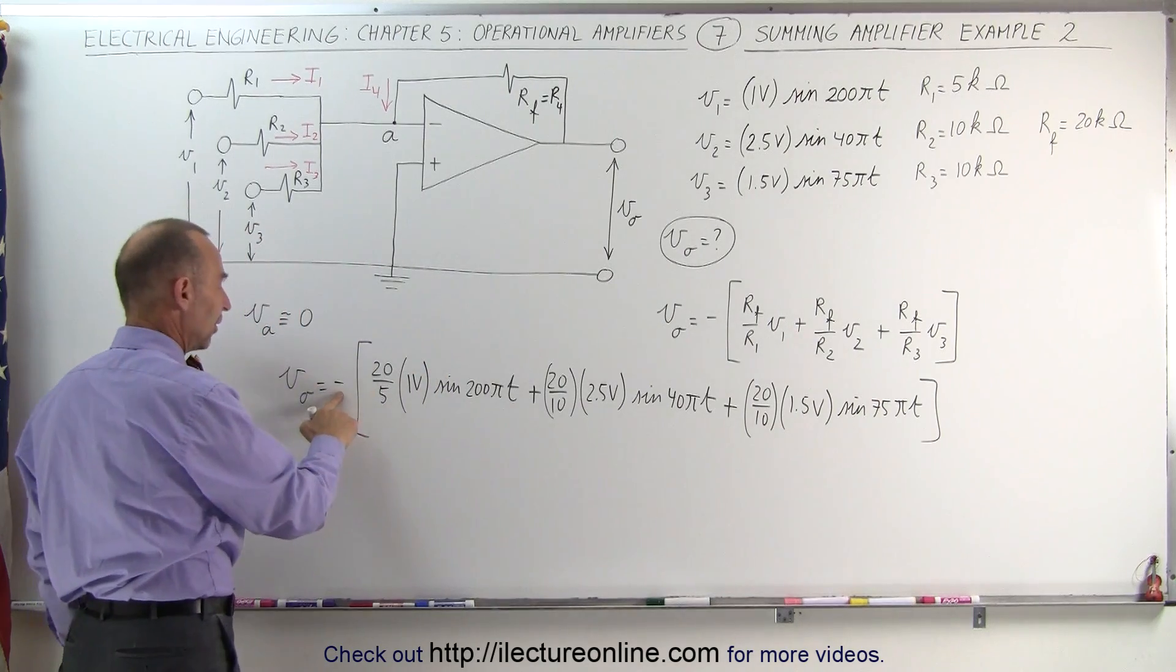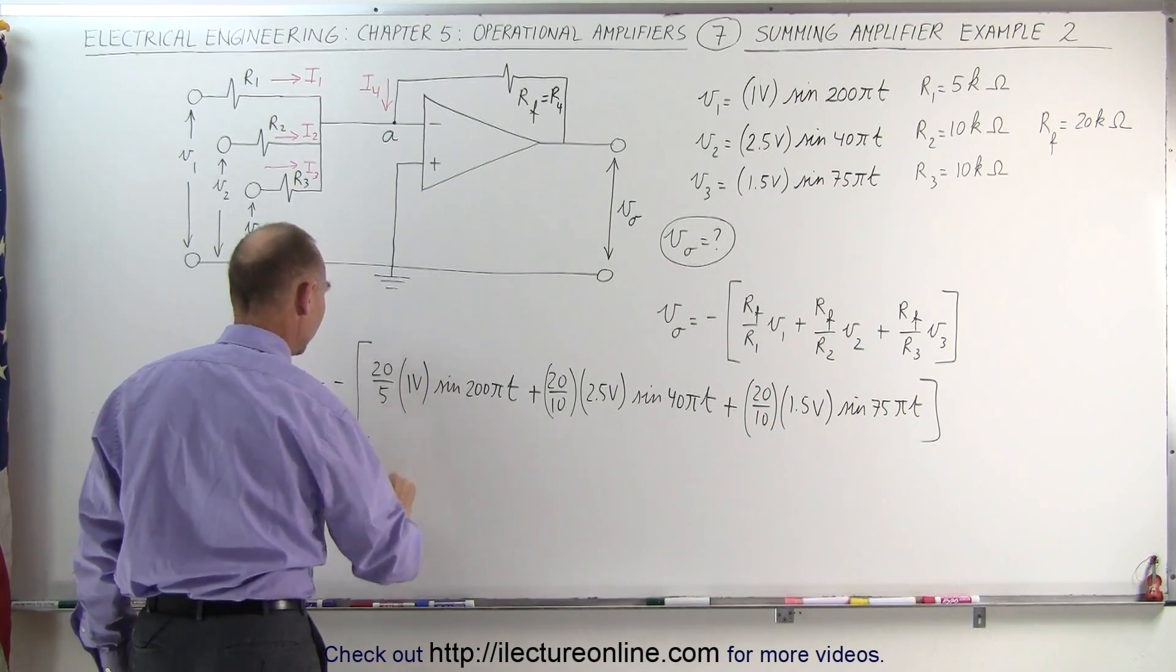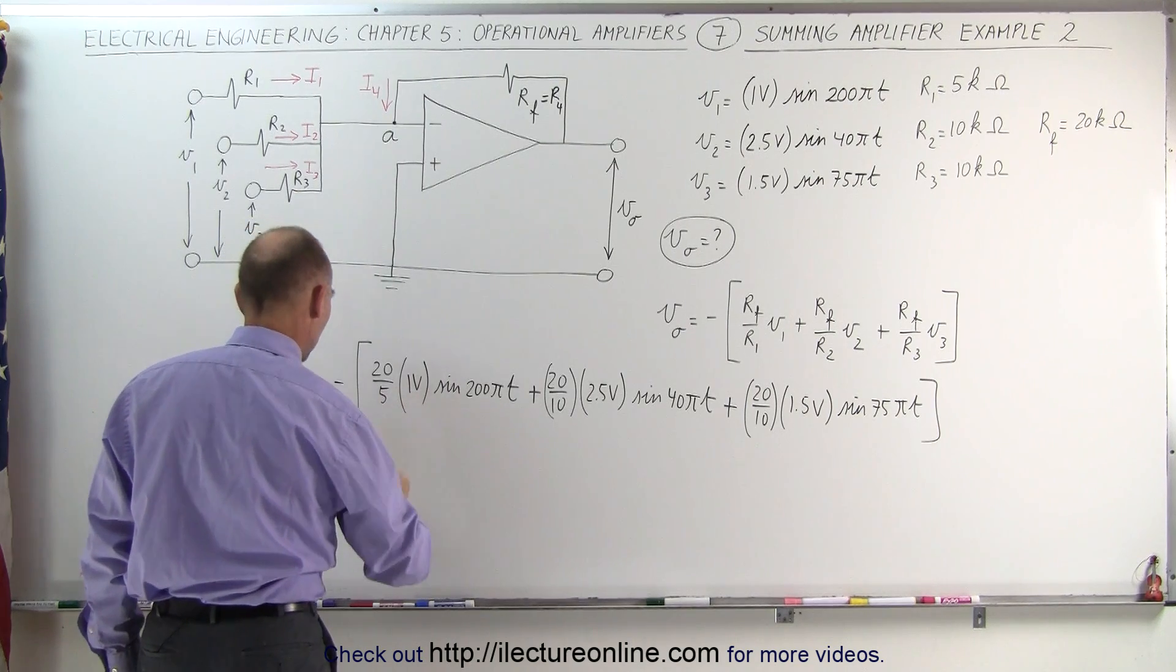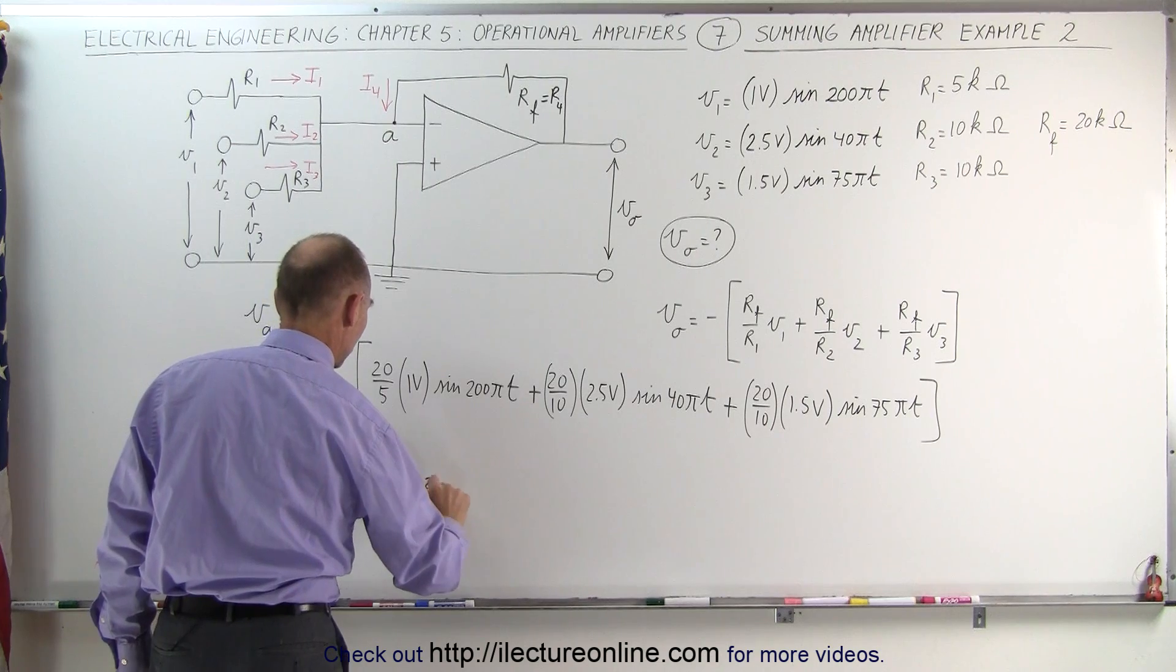Now we still have the negative in front because it's an inverting mode. This becomes equal to the negative of 20 divided by 5 is 4, that would be 4 volts times the sine of 200 pi T.